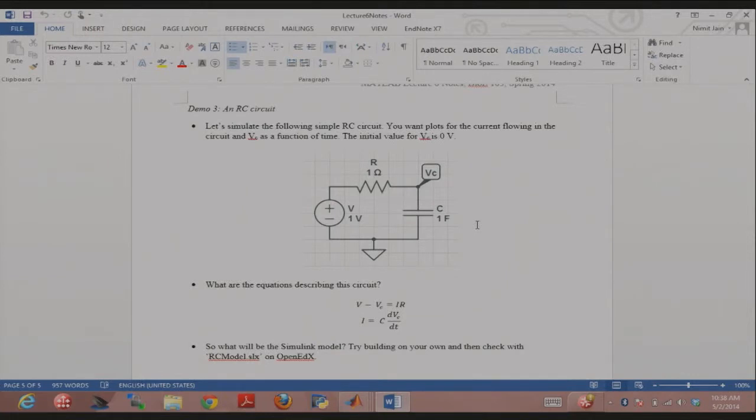V minus VC is equal to IR, right? Just Ohm's law here. And then this is the equation of a capacitor. Q is equal to C times V where Q is the charge. I just differentiated that so you get I is C, DVC over DT. The derivative of Q is I and the derivative of VC is just DVC over DT. So use these two equations. Do these two equations make sense? Everybody seen this before? Use these two equations and use the scope to plot the current flowing in the circuit and VC as a function of time. Take five to ten minutes to do that and then I can go over how to do it.